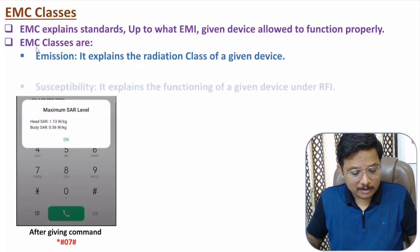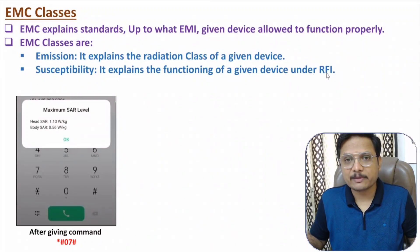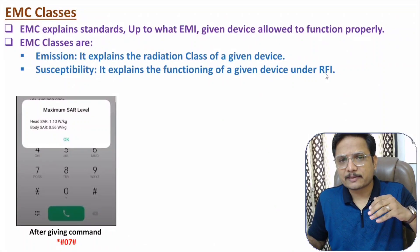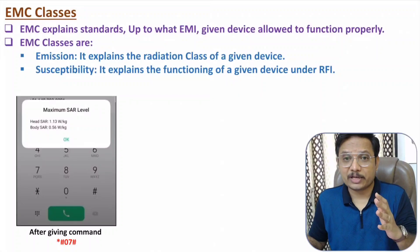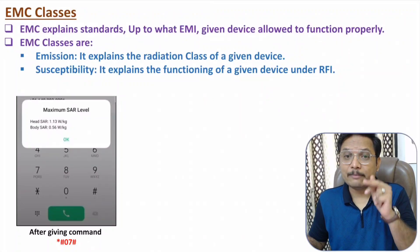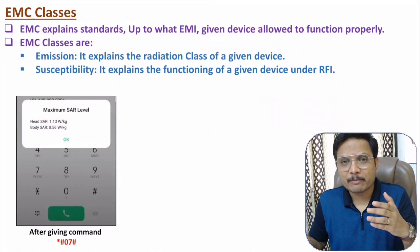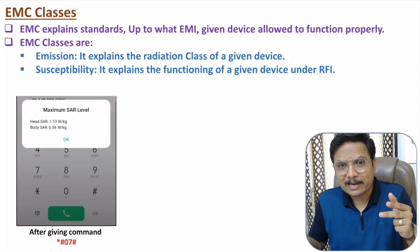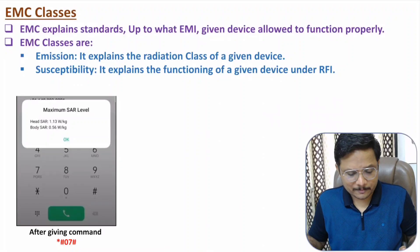The second class is susceptibility. It explains the functioning of a given device under radio frequency interference. Under interference, up to what level of interference a given device can function comes under susceptibility — it explains how susceptible a given device is under a given RFI. RFI means radio frequency interference.